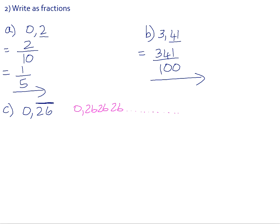Just another note: this line here means that both the 2 and the 6 recur. You could also put dots on the 2 and the 6 — that's another way it's sometimes written, showing that the 2 and the 6 both recur.